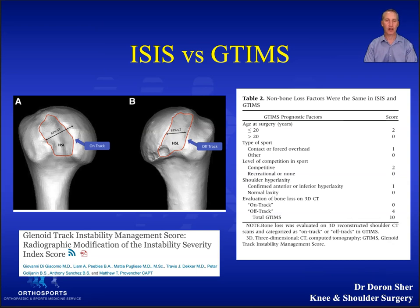On-track lesions are not likely to dislocate and off-track lesions are. The GTIMS score showed that a lot of patients placed in the high-risk group for re-dislocation using the ISIS score were actually placed in the wrong group and would have done very well with a soft tissue only procedure.